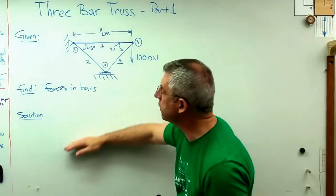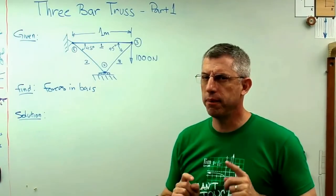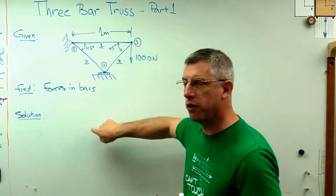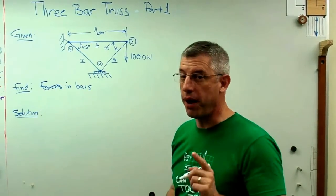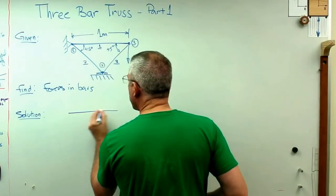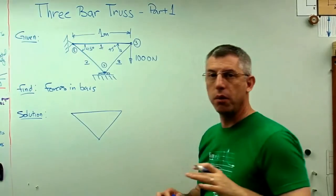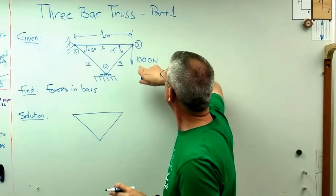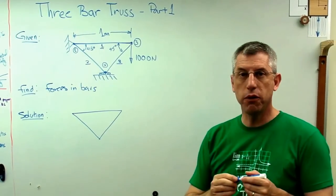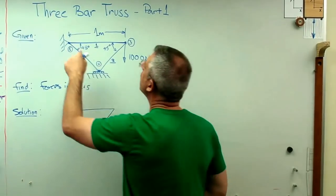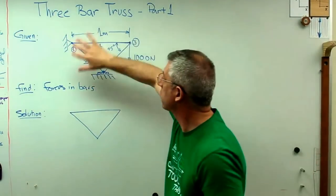So when I want to do a solution here, the very first thing I want to do in almost any statics problem, in almost any strength of materials problems, I want to draw a free body diagram. If you find yourself progressing through a solution and you aren't doing a free body diagram, you should be asking yourself, self, why is there no free body diagram here? You'd better have a pretty good reason. There are a few, but not many.